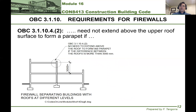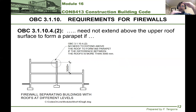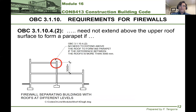There are also requirements for firewalls in the event that you have adjoining stories — that is, if one story is taller than the other. You can see that if the difference is more than three meters or 3,000 millimeters, then that parapet, that firewall, does not need to extend above the roof.